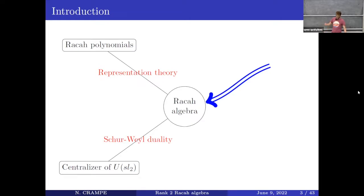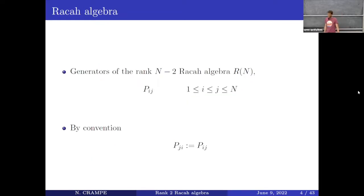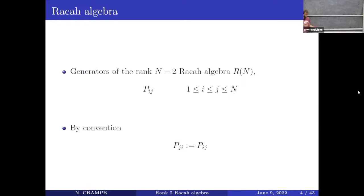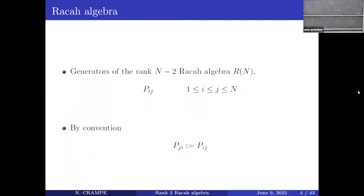Let me focus on the definition of what I call the Racah algebra. It's a higher-rank algebra of rank n minus two, which we call R_n. It has some generators P_ij, with i and j satisfying certain conditions. We recognize the more well-known Racah algebra R_3 when big N equals three - that's a rank one algebra. By convention, P_ji equals P_ij, with symmetry on the indices, which will be useful for presenting the commutation relations nicely.